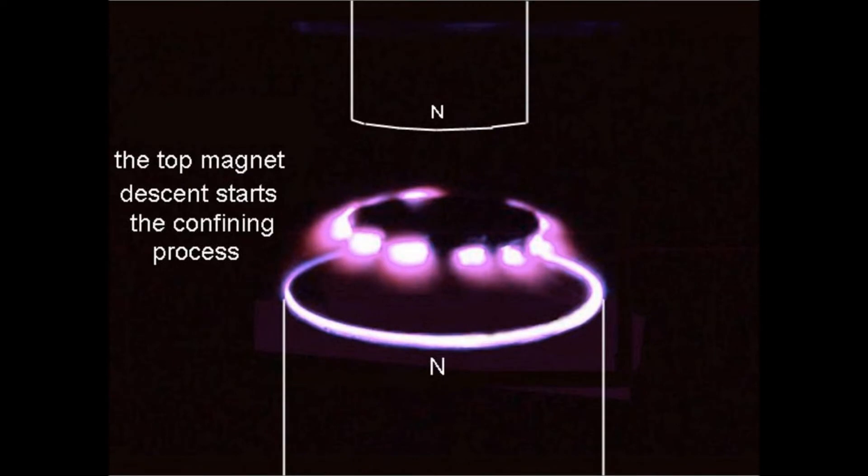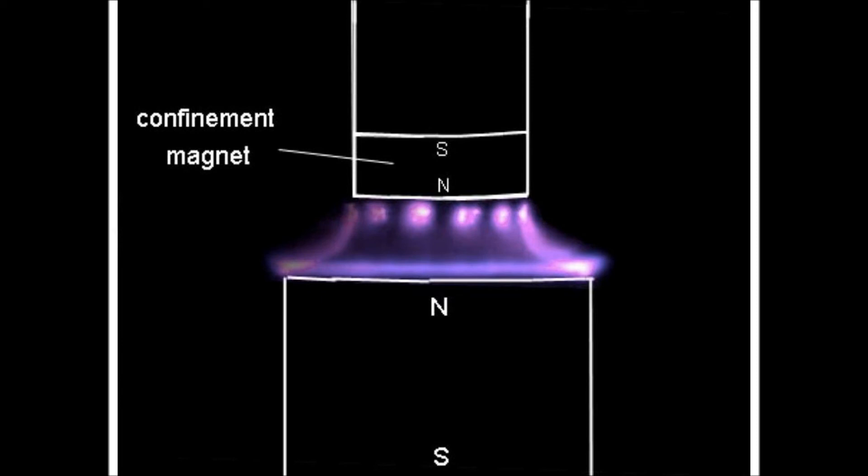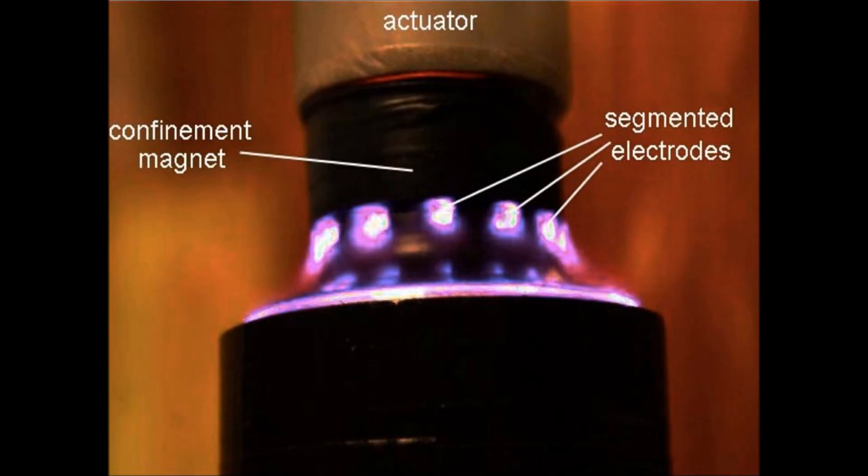Here, we have represented the two magnets. Up, the top magnet descent starts the confining process. Now, the glow discharge is fully confined to the wall. And here, we have represented the position of the magnets. Of course, in a real image of the aerodyne, this magnet will be replaced by coils. This is another view where you see the actuators, the confinement magnets, the segmented electrodes.